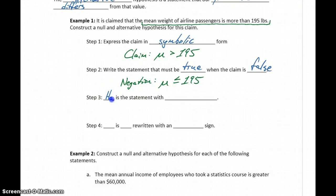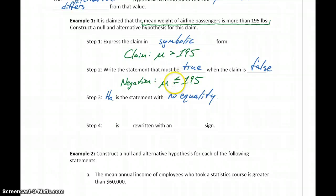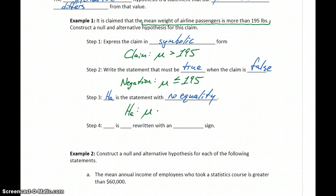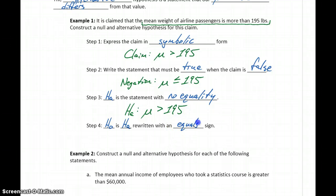Step three is to identify our null hypothesis. The null hypothesis is the one of those two statements with an equality component. Here, mu less than or equal to has that 'or equal to' part, but our original statement — greater than — is a strict inequality. So our alternative hypothesis is that the mean is greater than 195. To generate the null hypothesis H0, that's the alternative hypothesis rewritten with an equal sign, so mu is exactly equal to 195.